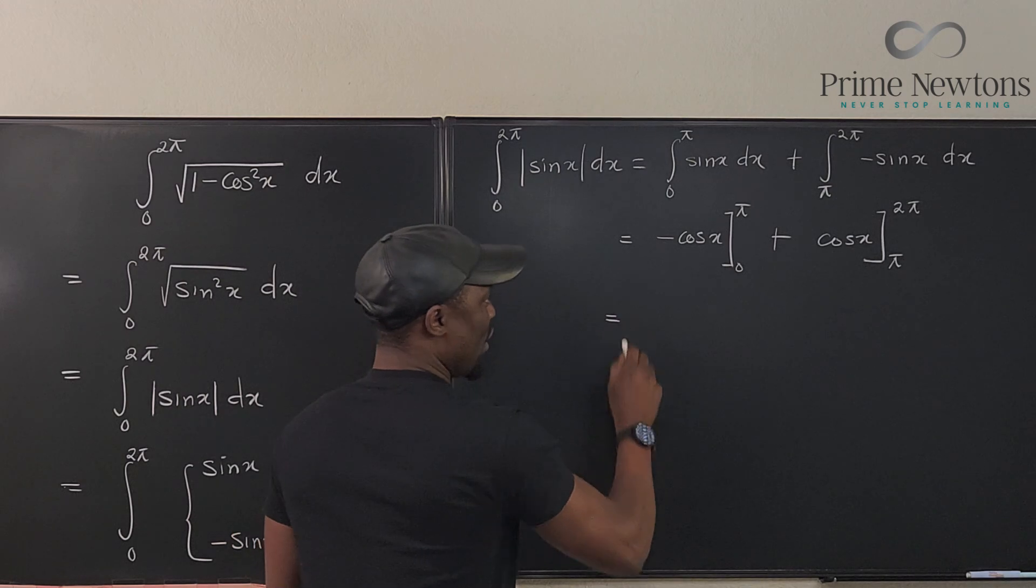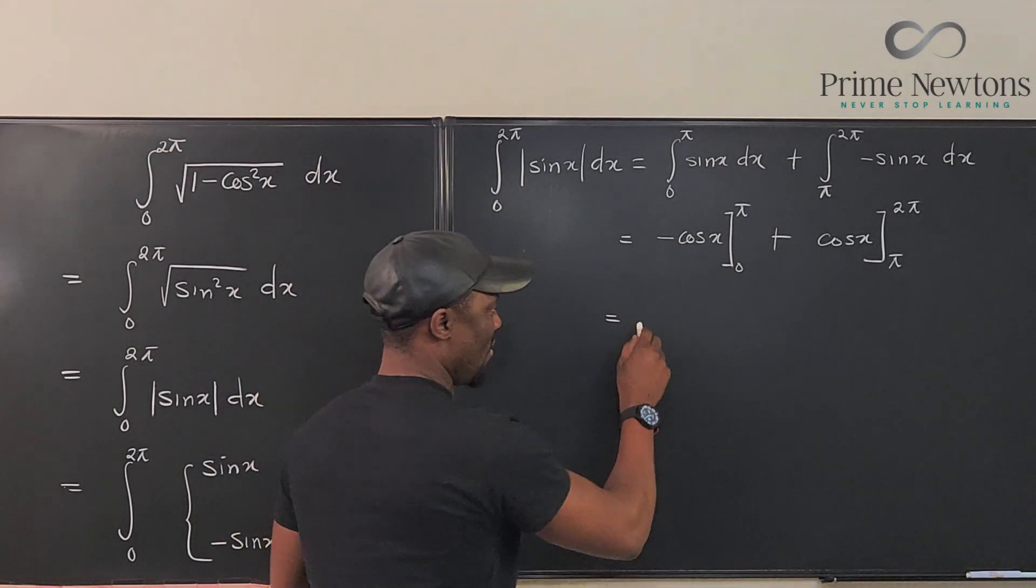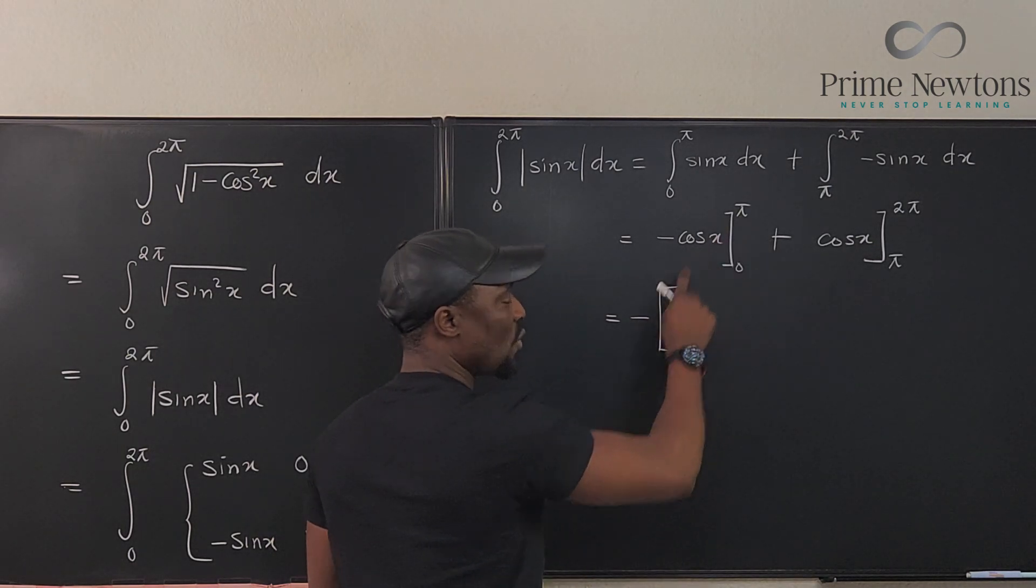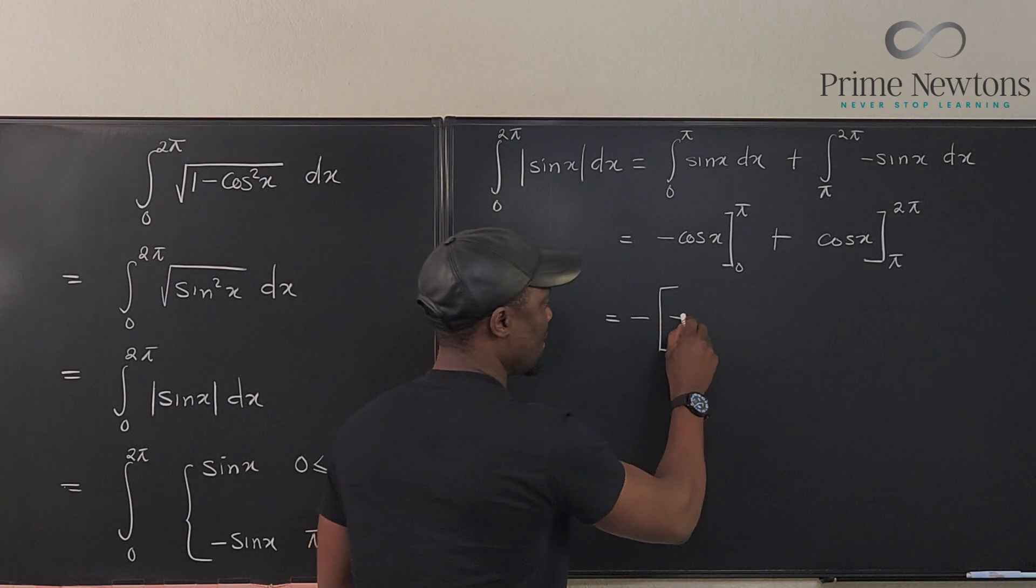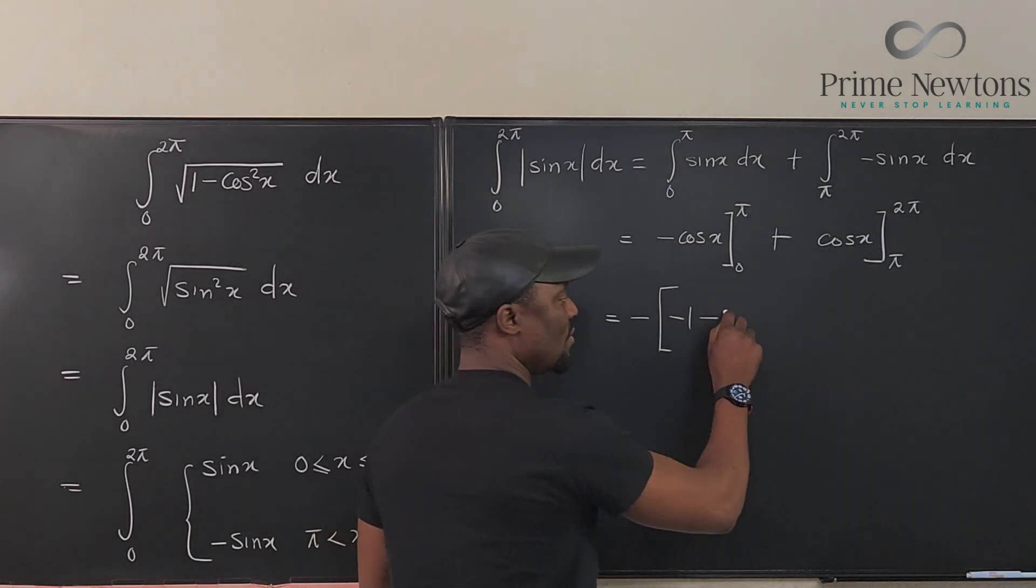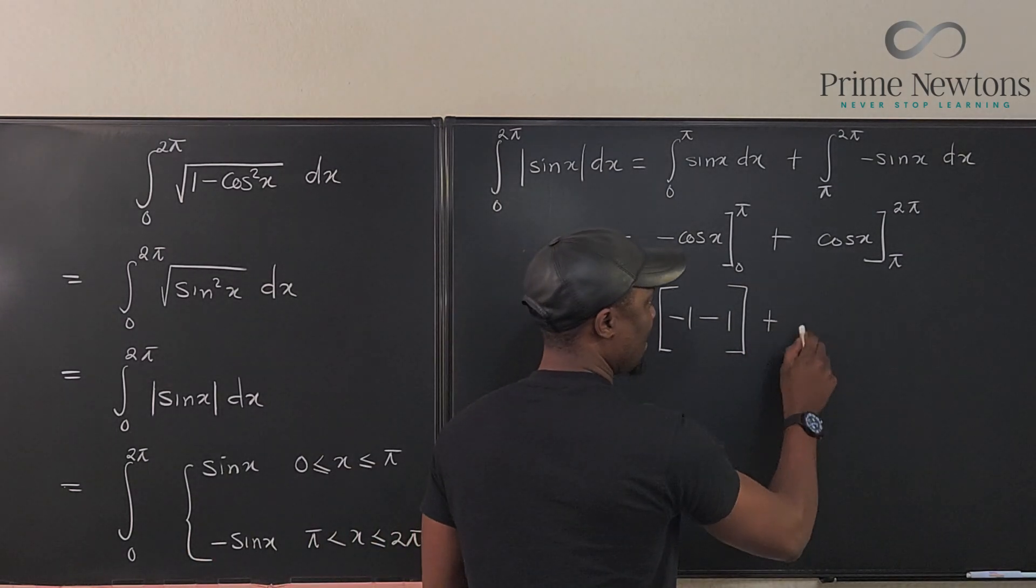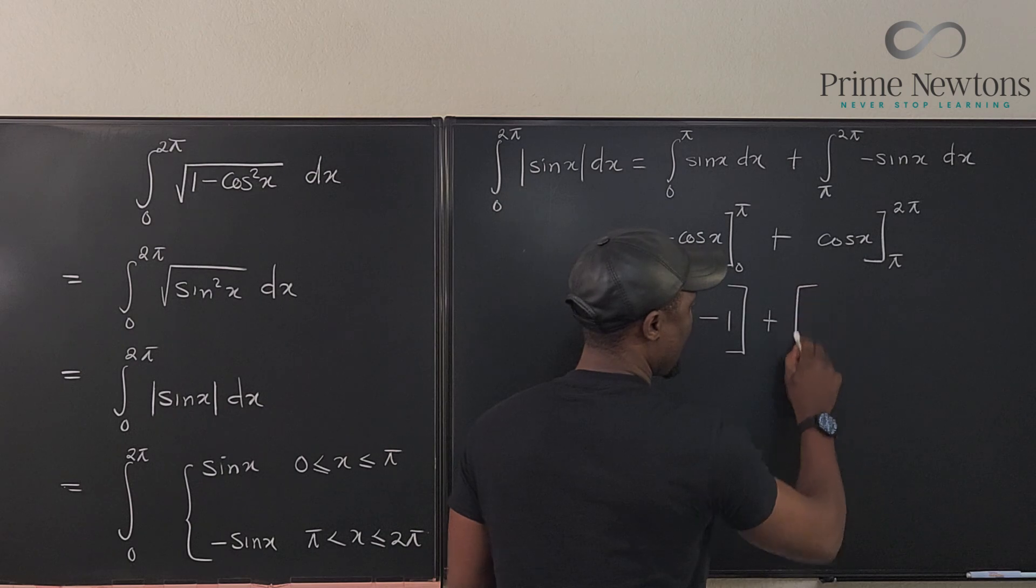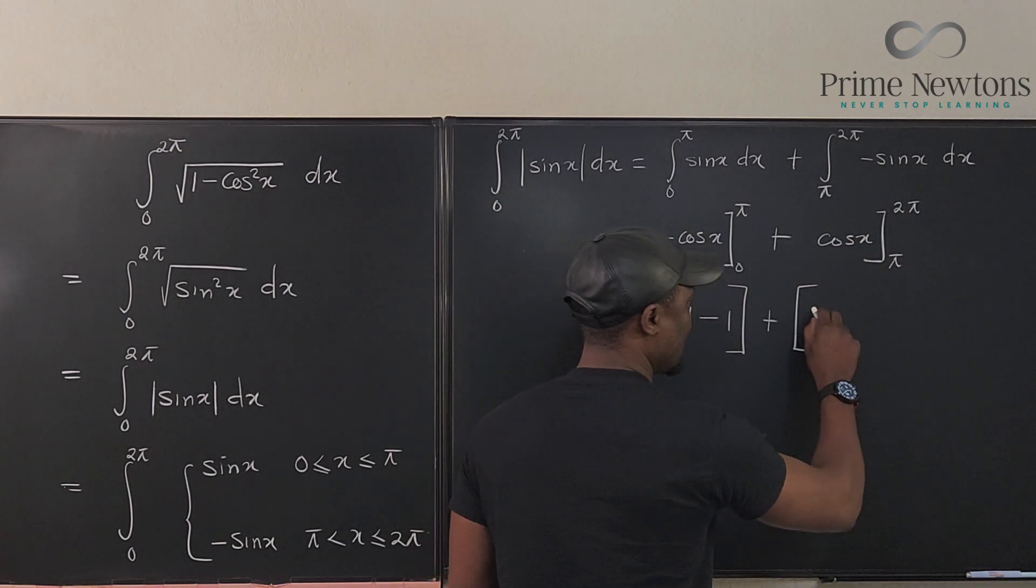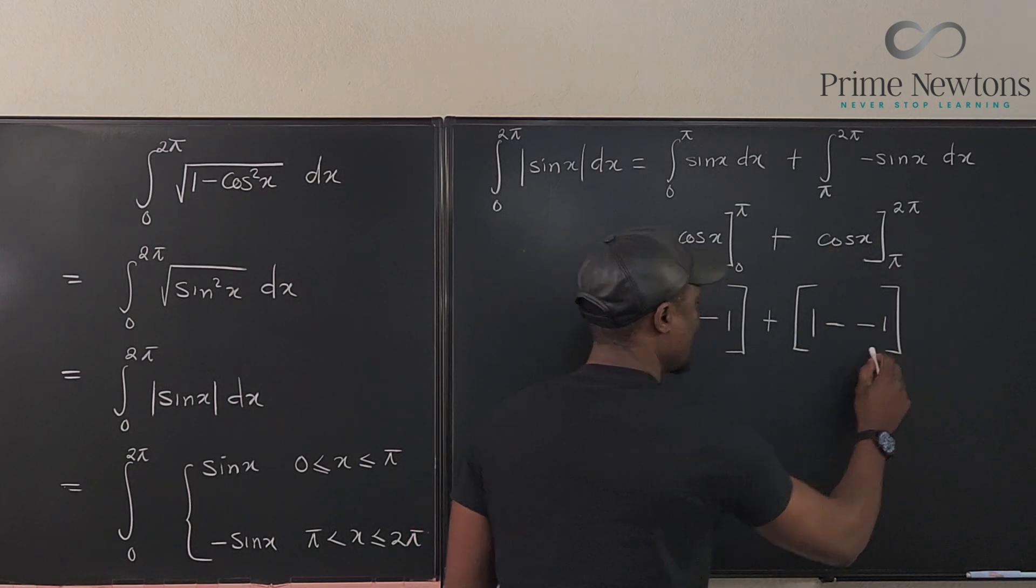So let's go here. Just to make things cool, I'm going to pull this negative here and just do my evaluation. So if I evaluate, put π here, cosine π is negative 1 minus, put zero here, it's going to be cosine zero is 1. Nice. Done with the left-hand side. Go to the right-hand side, it's going to be cosine 2π is going to be 1. Minus cosine π is minus 1. Nice.